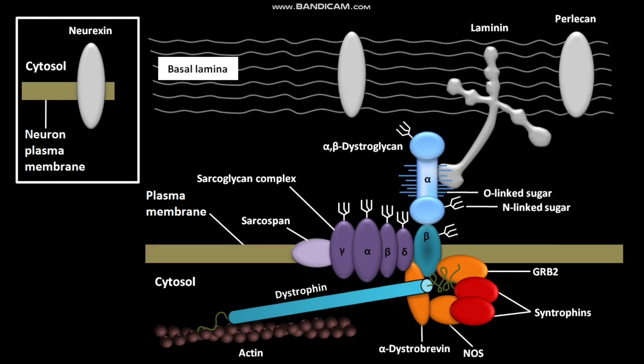Dystroglycan mutations greatly reduce the clustering of acetylcholine receptors on muscle cells at the neuromuscular junctions. Dystroglycan is dependent on the basal lamina proteins laminin and agrin.